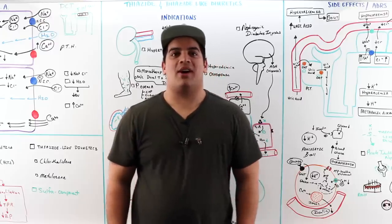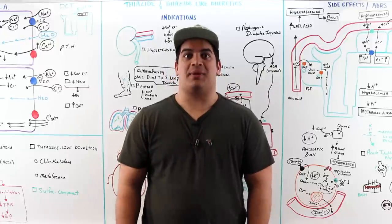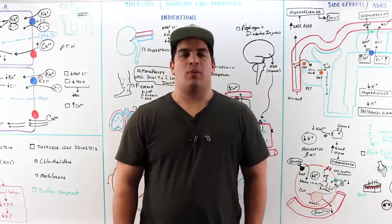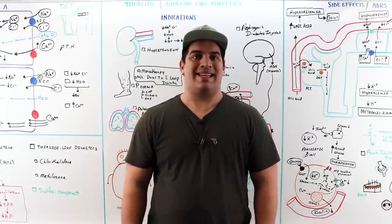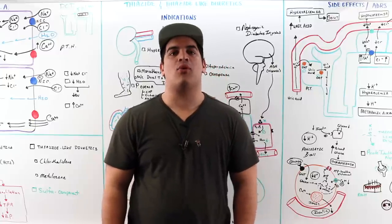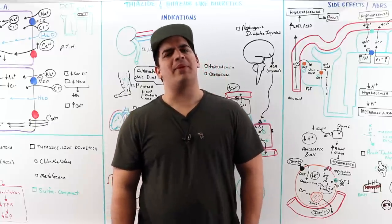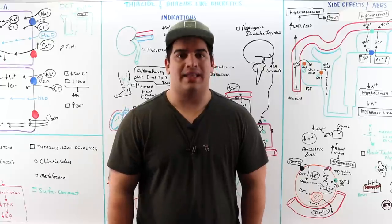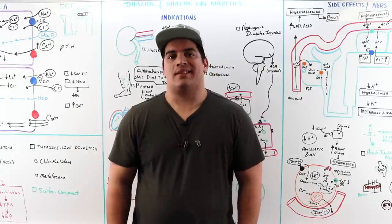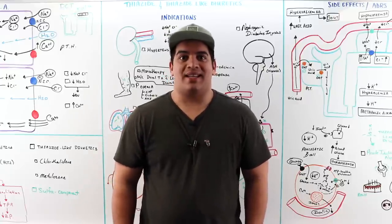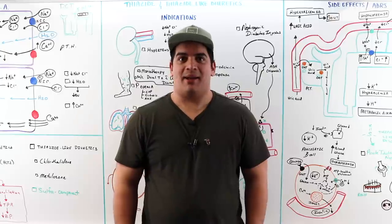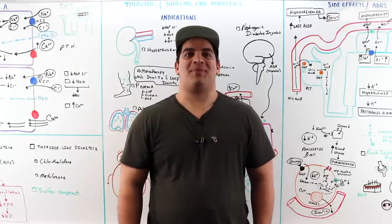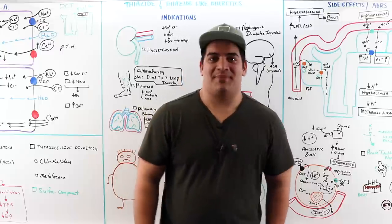In summary, this video covered thiazide and thiazide-like diuretics: their mechanism of action (NCC inhibition), the different drug types, indications including hypertension, fluid overload, nephrogenic diabetes insipidus, and calcium-related conditions, as well as side effects including hyperuricemia, hyponatremia, hypochloremia, hypercalcemia, hypokalemia, metabolic alkalosis, hyperglycemia, and acute interstitial nephritis.